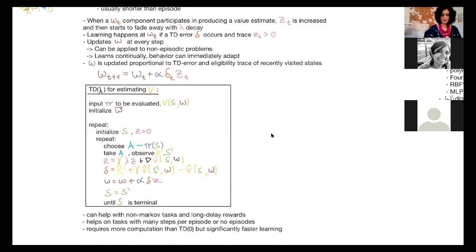So these eligibility traces can help with non-Markov tasks because it makes it similar to Monte Carlo methods which have an advantage because they don't bootstrap. But td lambda bootstrap though, but it still goes in the direction. And it can deal better with long-term rewards.